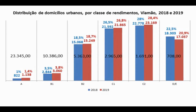As classes A e B1 perfazem respectivamente 1,4% e 3,8% dos domicílios em 2019. A classe B2 representa 18,7% da população de Viamão. A grande concentração de pessoas está nas classes C1 e C2, com renda per capita domiciliar entre R$ 2.965,00 e R$ 1.691,00, representando 26,8% e 28,4% respectivamente. As classes D e E juntas somam 20,9% da população, com renda média domiciliar mensal de R$ 708,00.